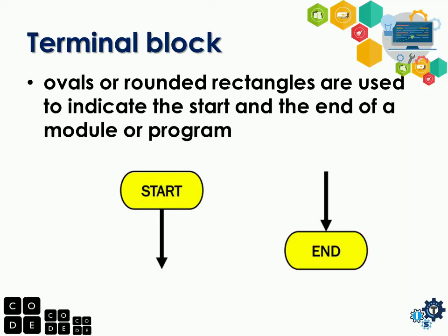Terminal block: ovals or rounded rectangles are used to indicate the start and the end of a module or a program. This is the symbol used for the termination or start of an algorithm or flowchart. We have two — the start and the end. The start is where the flowchart begins, and the end is the last or ending point of the flowchart. Don't forget, a flowchart is an algorithm — a graphical representation — so there must be an end.